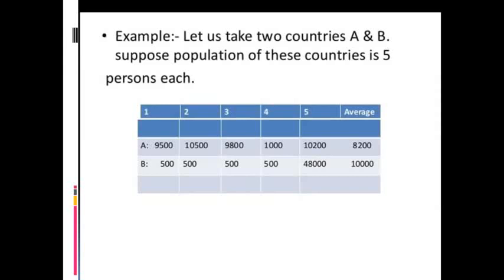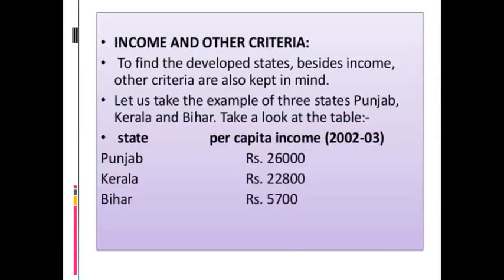This is the disparity we see when calculating average income — average income hides disparities. Average income is not a fair criteria to compare countries, and this is the main limitation of average income. In the next session, we will discuss the remaining part of the chapter. That's all for today.